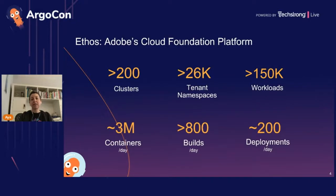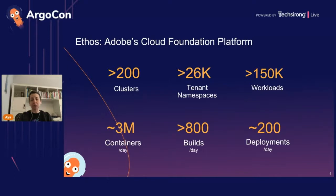Just to give an idea of the scale for Ethos: we currently have around 200 clusters, the vast majority of them multi-tenant. There are around 26,000 tenant namespaces on those clusters, and over 150,000 workloads running at any given time. We're averaging around 3 million containers per 24 hours, and doing around 800 builds a day and around 200 deployments through our CI/CD solution per day.